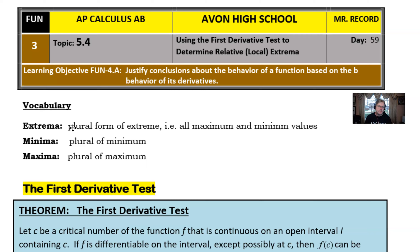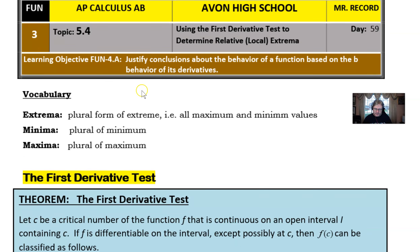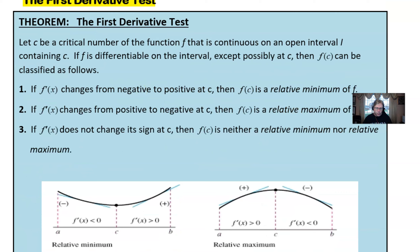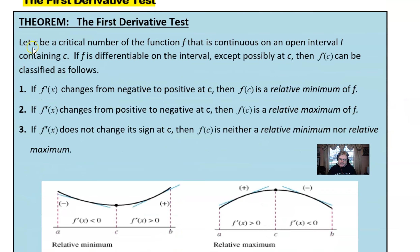If we want to talk about the plural of only the minimum — say if there's more than one minimum value — we call that 'minima,' and the plural of maximum is 'maxima,' just so you know we use those terms. So here is the first derivative test in this blue box: if C is a critical number of your function F — remember, a critical number is when your derivative equals zero or is undefined — on an open interval I containing C, F is differentiable on that interval except possibly at C, and F of C can be classified as follows.